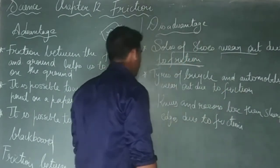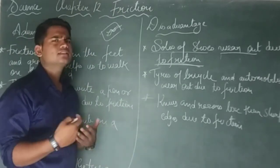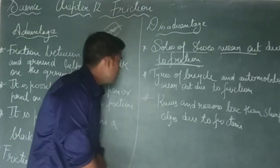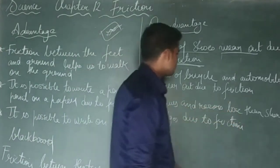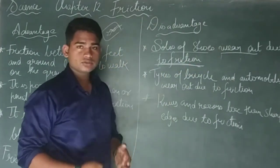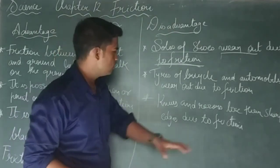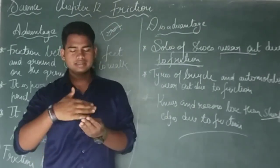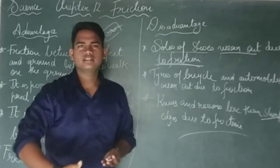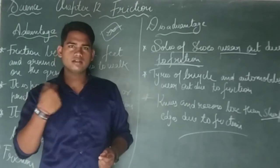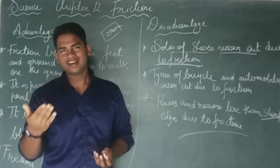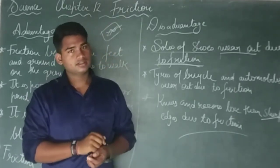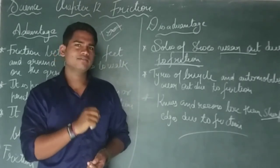The tires and automobiles wear out due to friction. Knives and razors lose their sharpness because of friction on the surface being cut. So the disadvantage of friction is that we lose the sharpness of cutting tools.